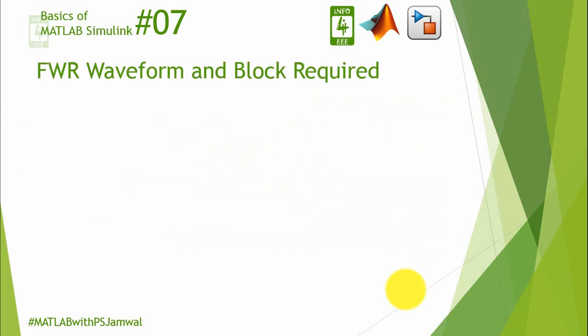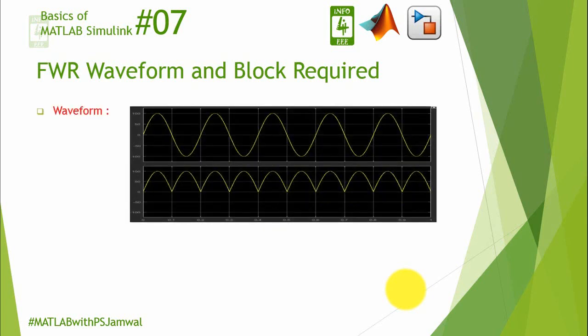First of all we will discuss about FWR waveform and the blocks which are required to generate it. Full wave rectifier waveform consists of only positive half cycles, as you can see in the figure, unlike the sinusoidal waveform which consists of a positive cycle as well as a negative cycle.